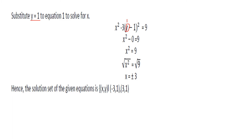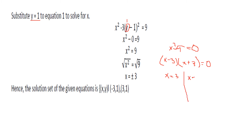Solve for x by extracting the square root: x equals positive or negative 3. We can also write x squared minus 9 equals 0, which factors as x minus 3 times x plus 3 equals 0. So x equals 3 or x equals negative 3. Hence, the solution set of the given equations is negative 3, 1 and positive 3, 1.